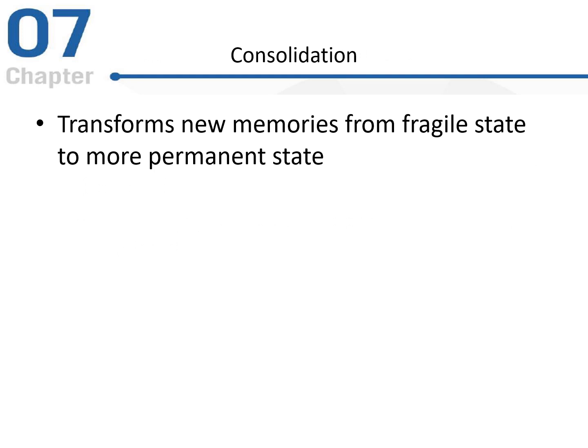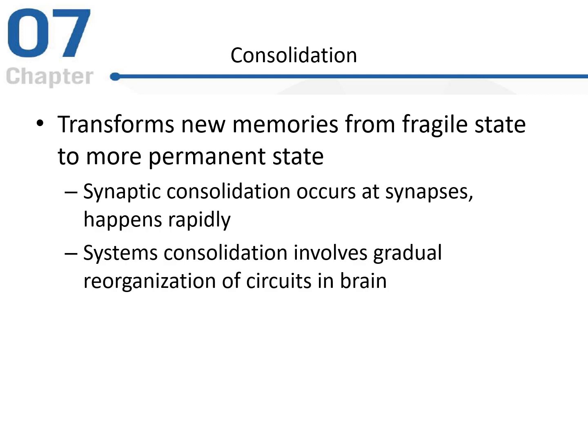Now we'll take a look at memory consolidation. This is what happens when we transform a new memory from a very fragile new state to a more permanent state in long-term memory. Through consolidation, we're moving it into a more permanent state for storage and recall later on. This type of synaptic consolidation occurs at the synapses and it happens very quickly. It also involves gradual reorganization of circuits in the brain, so there's an actual structural change in the brain when we are moving this information into a more permanent state.